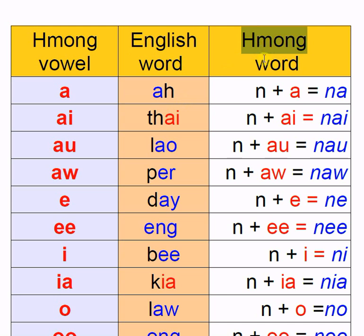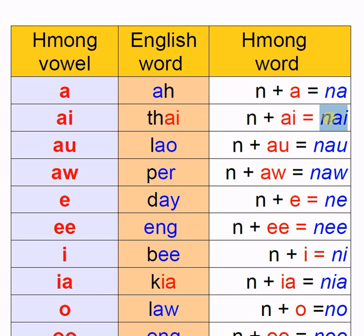Over here is the Hmong word example. The first vowel is A — A, like the English word 'A'. Both Hmong and English have the exact same spelling and similar phonic or sound. The example Hmong word is Nai.